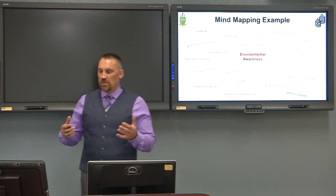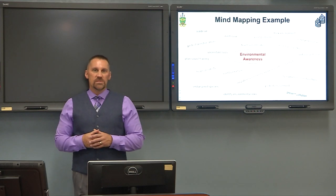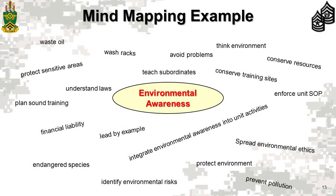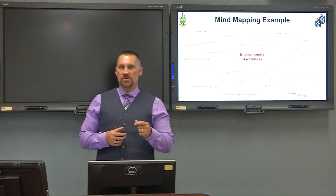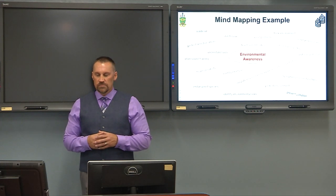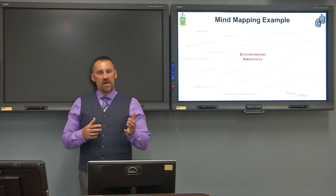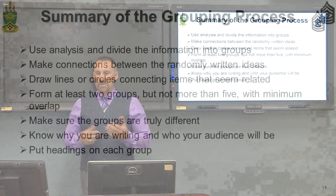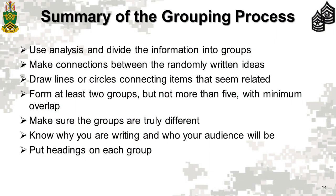So in this case, if your topic was environmental awareness — and this will be a practical exercise during the English writing lesson — you will jot down everything you know about environmental awareness, whether it applies to your specific purpose and audience or not, because you may generate some new ideas that will take you down another path. Once you have those ideas mapped out, you begin to group them into like categories. The recommendation is at least two groups but not more than five.